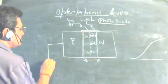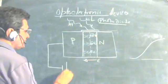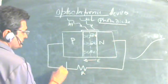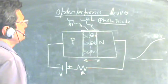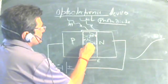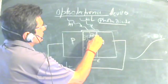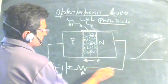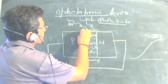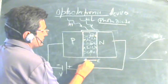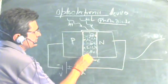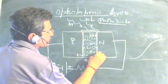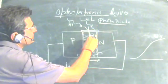To achieve this, we apply a reverse bias — P is connected to negative and N is connected to positive, with a resistance in the circuit. When electron-hole pairs are created in the depletion region by the photon energy, the reverse bias further widens the depletion region and the electric field causes holes to move along the field to the P side while electrons cross to the N side.